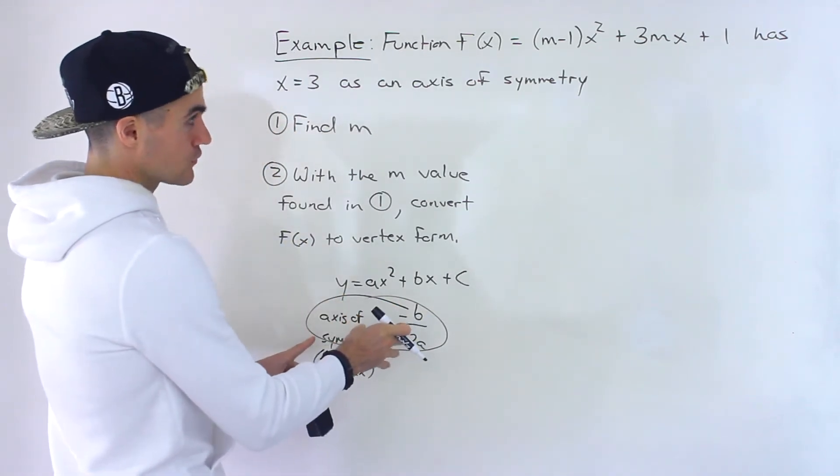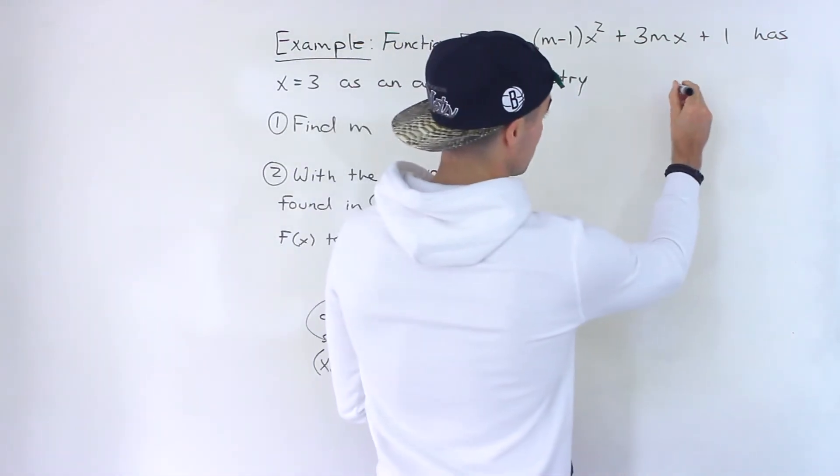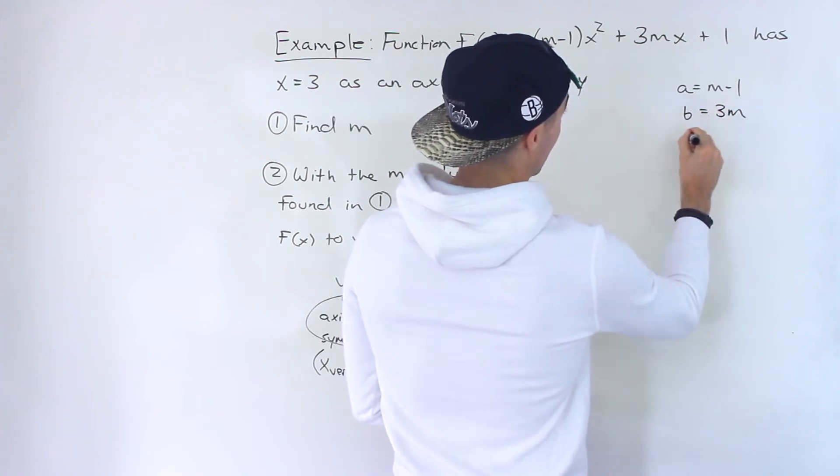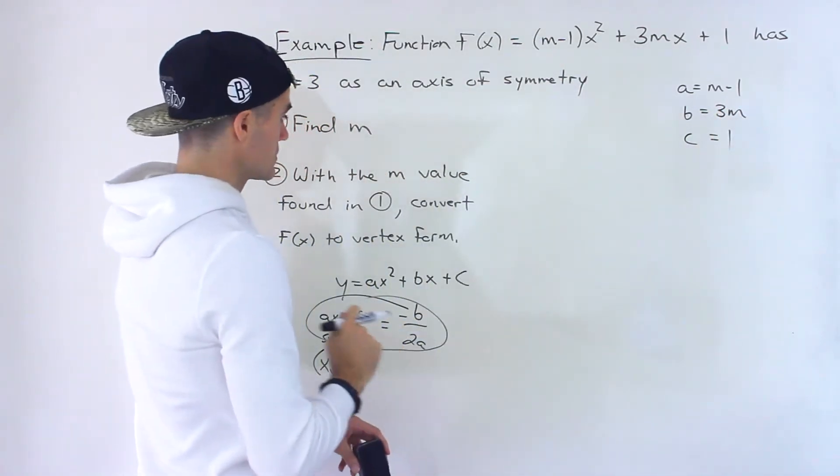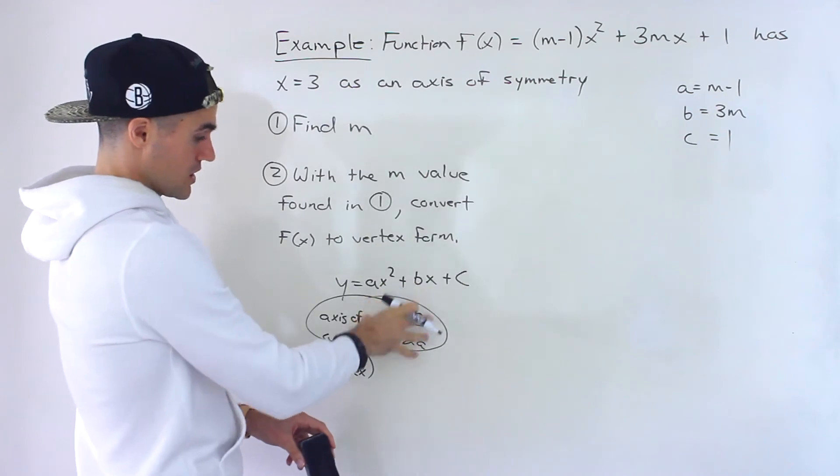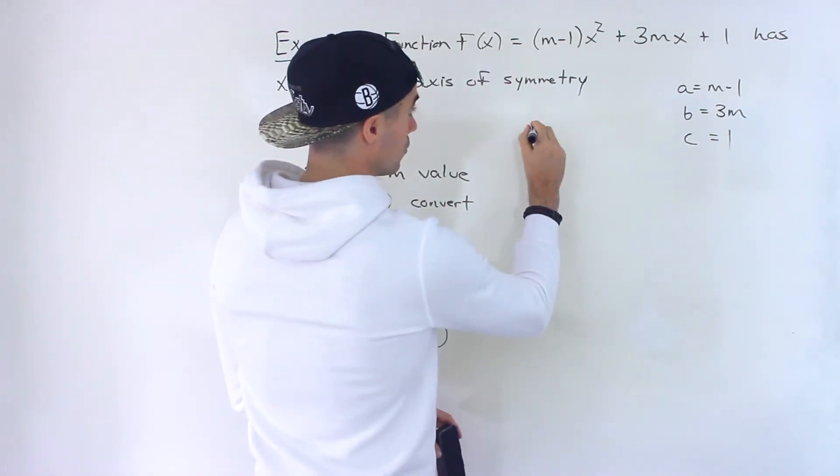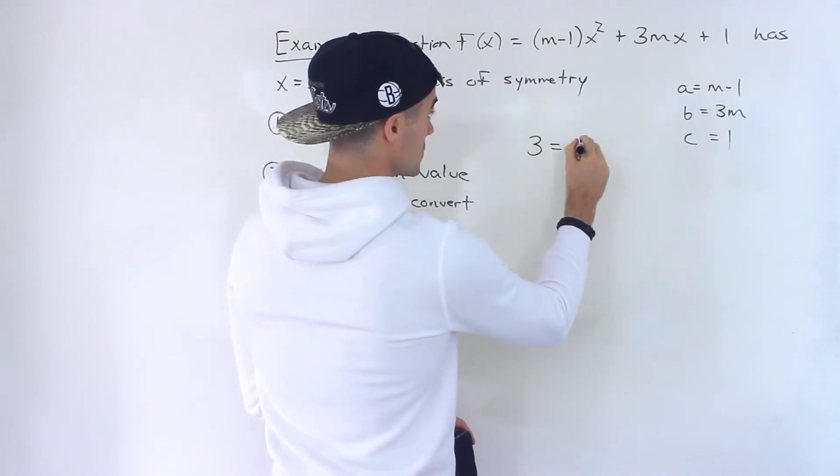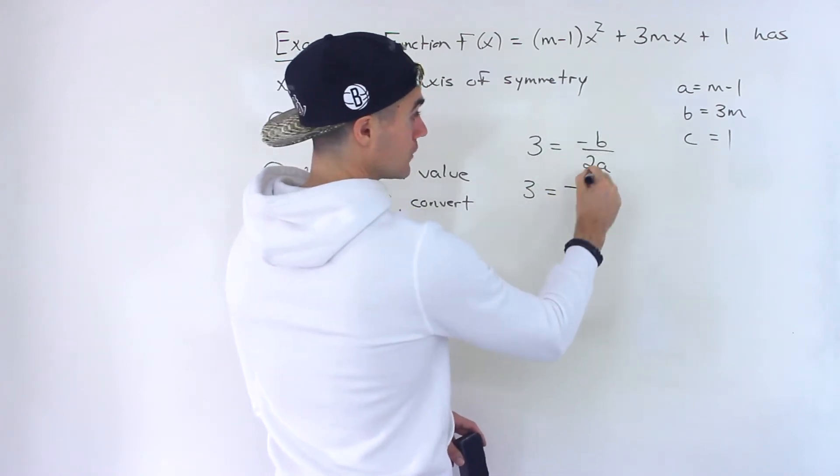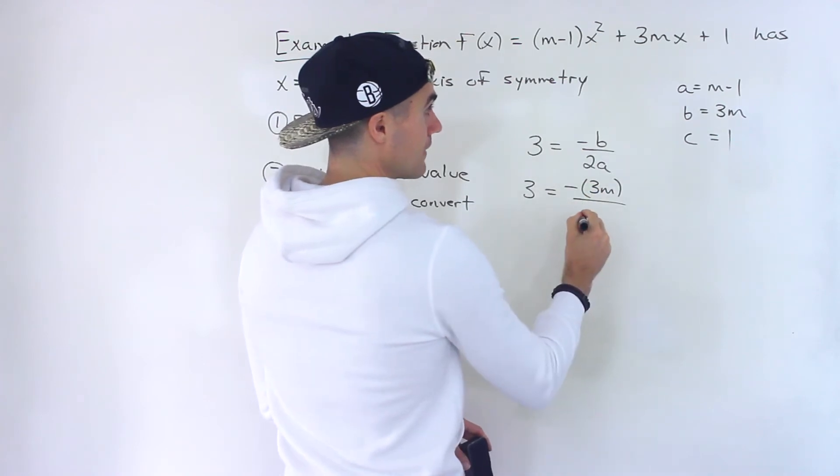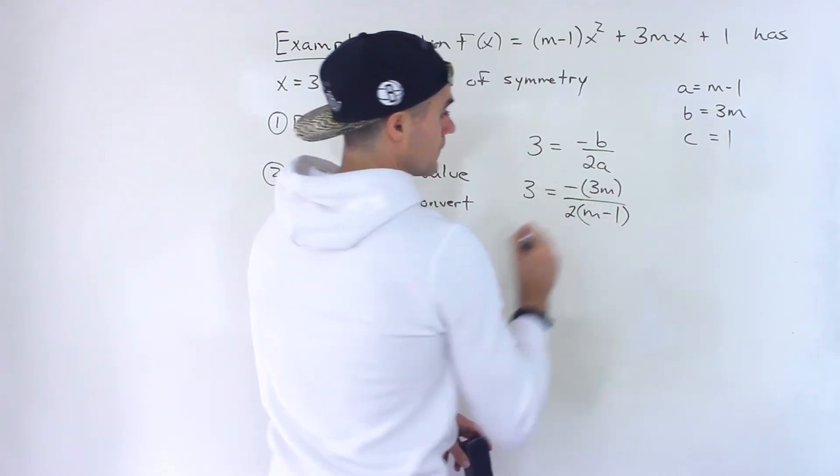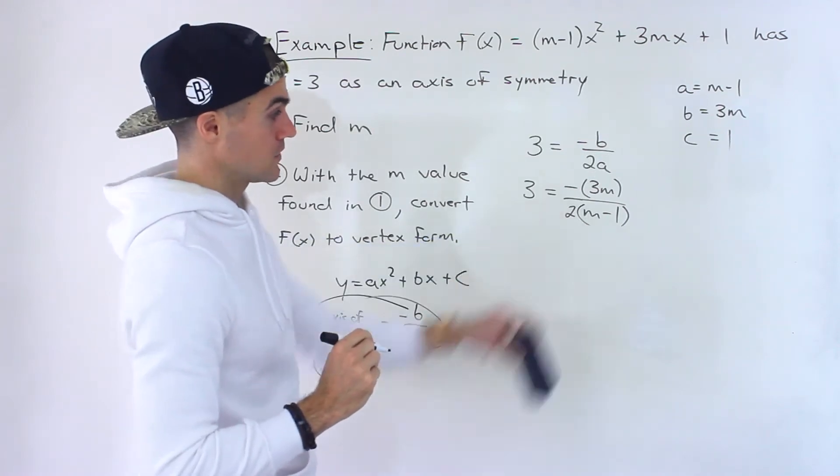And so to find this m value, we would basically use that formula right there. So the axis of symmetry is negative b over 2a. And again, if we go back to this specific quadratic, we know that a value is m-1, the b value is 3m, and then the c value is 1. We actually don't need the c value for number one, but I'll write it out anyway. So using those parameters here, the axis of symmetry is 3. So we basically know for this case that 3, the axis of symmetry, is equal to negative b over 2a. So plugging everything in, negative, the b value is 3m. And then the a value is m-1. Oh, sorry, it's 2a. So it's 2 times that a value of m-1, like that.